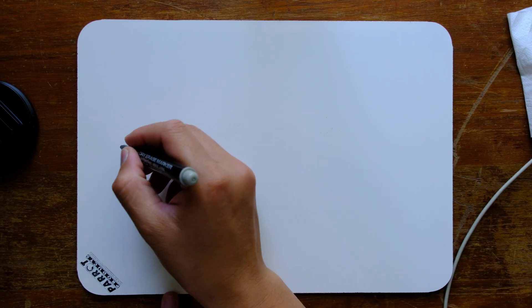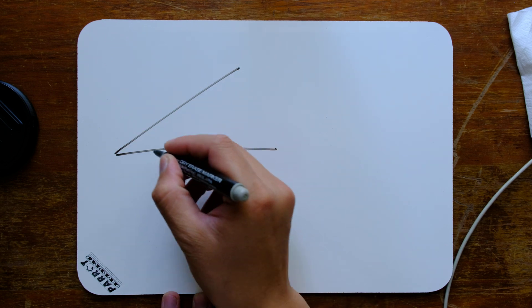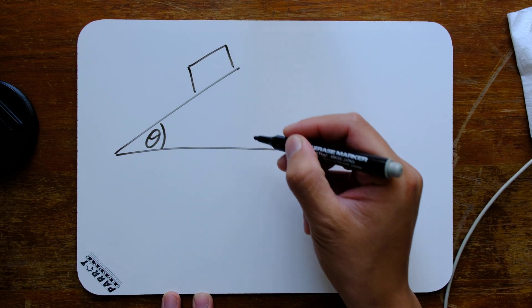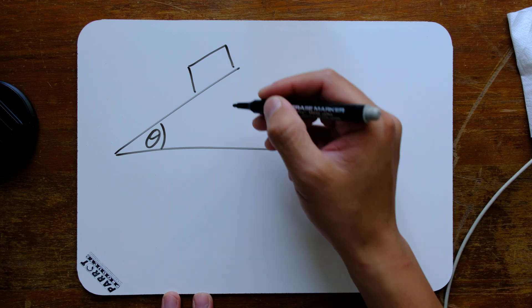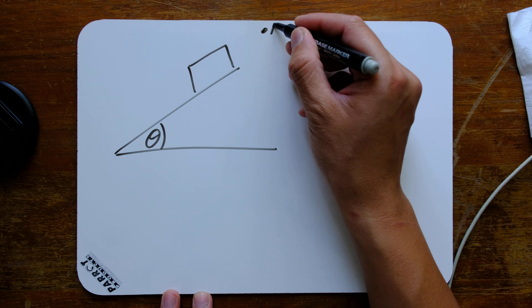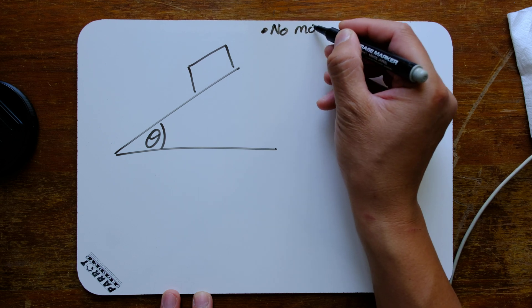Right, so we're going to look at an object on a slope. So a slope will have a specific angle, the object will have a mass. Now because it has a mass, we're going to start with something with no movement.